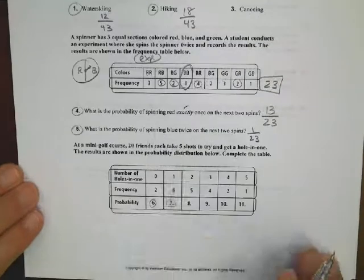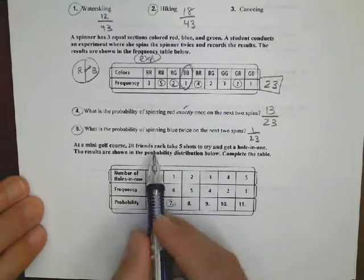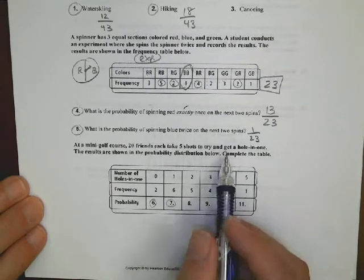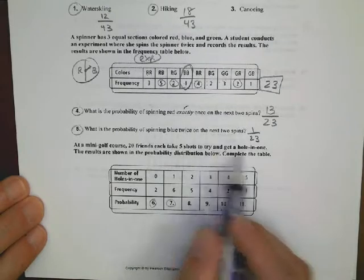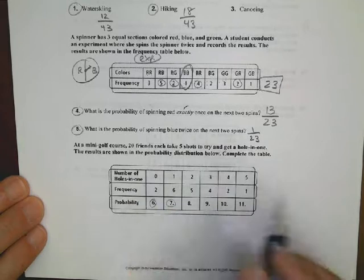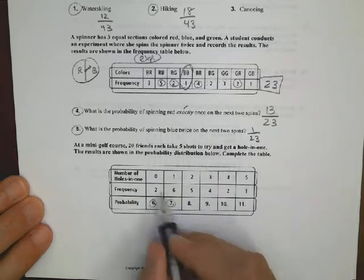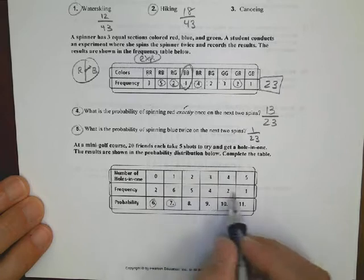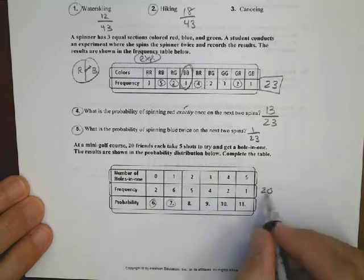Looking down at the bottom section here, you have 20 friends each take 5 shots to try to get a hole in 1. Great job, friends. And the results are shown there. Again, I want to find out my total. So I have 6, 7, 8, and then I have plus 5, plus 4, plus 2, plus 1. I end up with 20 as my total number.